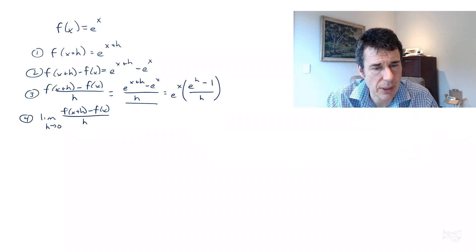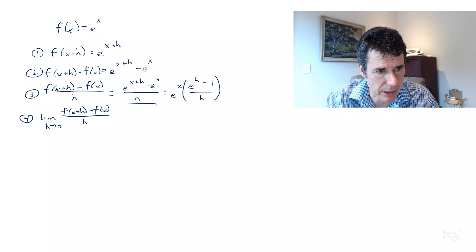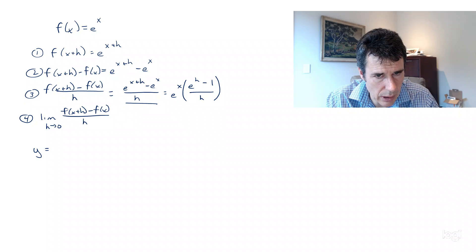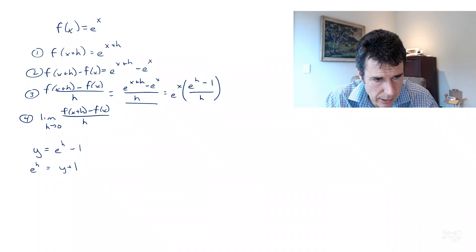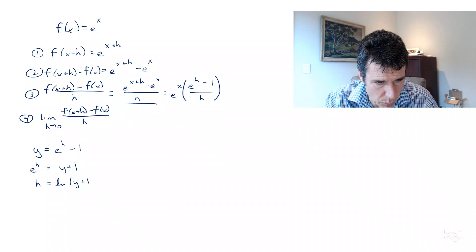So now we're going to do a substitution. This is a little trick to make this work. Let's let y = e^h - 1, and let's solve for h. So e^h = y + 1. Take the natural log of both sides, and we have h = ln(y + 1).